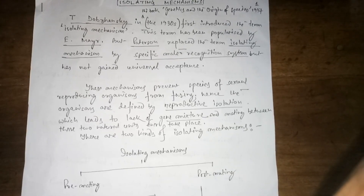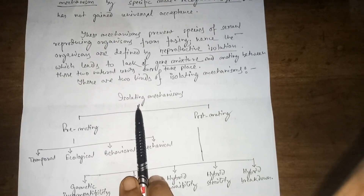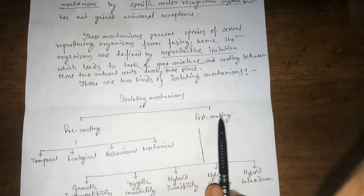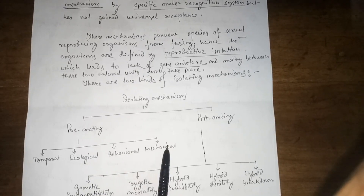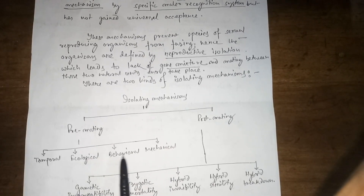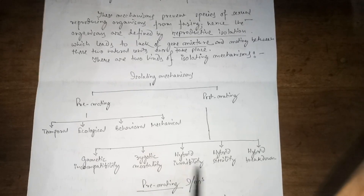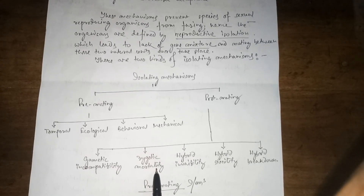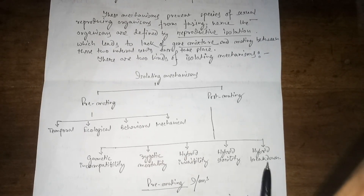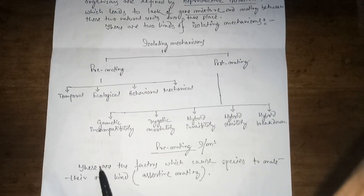There are two kinds of isolating mechanisms: first, pre-mating; and second, post-mating. Under pre-mating, there are four subdivided groups: temporal, ecological, behavioral, and mechanical. Under post-mating, there are five subdivided groups: gametic incompatibility, zygotic mortality, hybrid inviability, hybrid sterility, and hybrid breakdown.